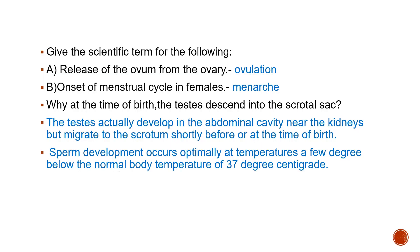Now let us start with the first question: give the scientific term for the following. The first one is release of ovum from the ovary — it is called ovulation. The second one is the onset of menstrual cycle in females — it is called menarche.